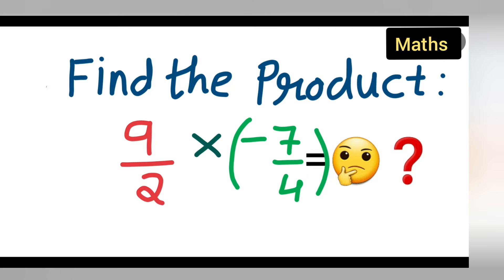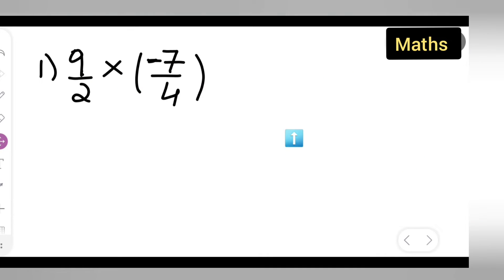So basically we need to find the product. Product means we need to multiply these numbers right, 9 upon 2 multiplied by minus 7 upon 4. Now let us see how to multiply this. So first take down the question, 9 upon 2 multiplied by minus 7 upon 4.